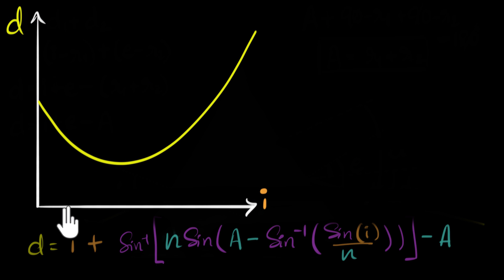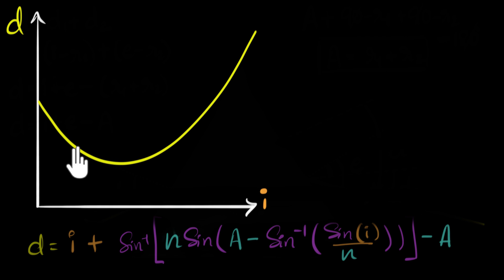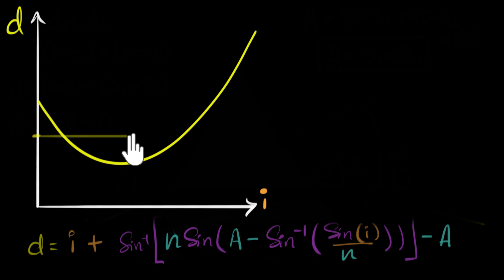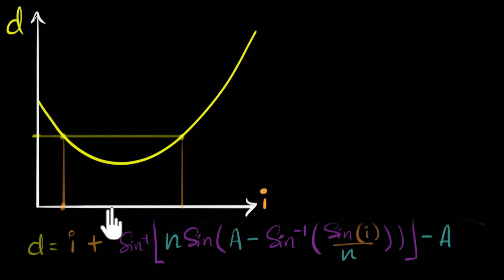We can use computers to draw the graph, and it pretty much looks like this. You can see that as the angle of incidence increases, the deviation actually decreases, hits a minimum, and then increases again. We are interested in that minimum value. The exact shape of the graph might vary a little bit depending upon what values of N and A we choose. For any particular value of deviation, that deviation can be obtained for two values of I.